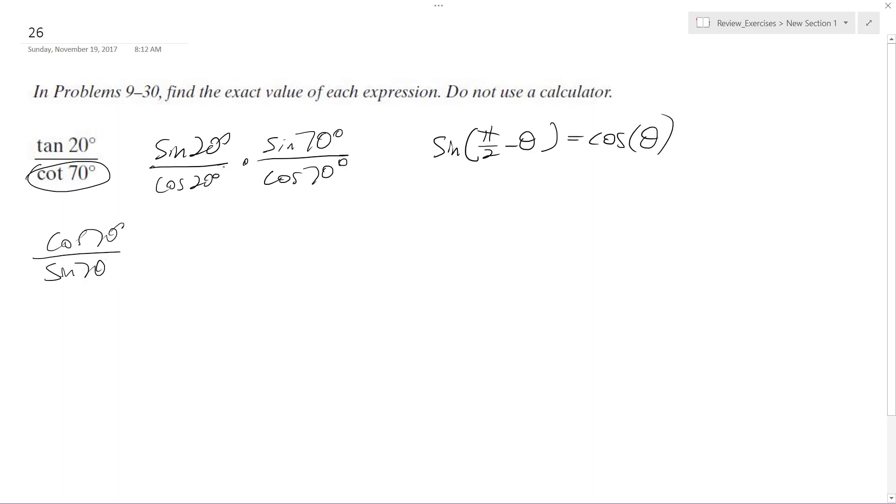So pretty much what that means is the sine of 20 is equal to the cosine of 70, so these cancel out, and the cosine of 20 is equal to the sine of 70 based off of this trig property here.